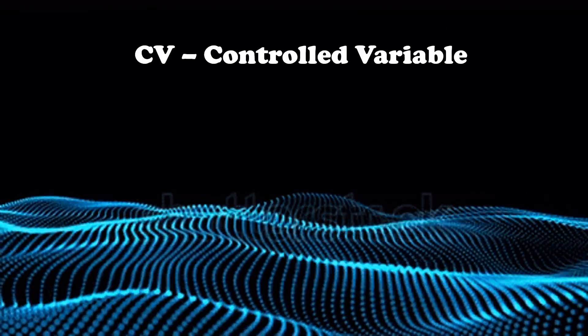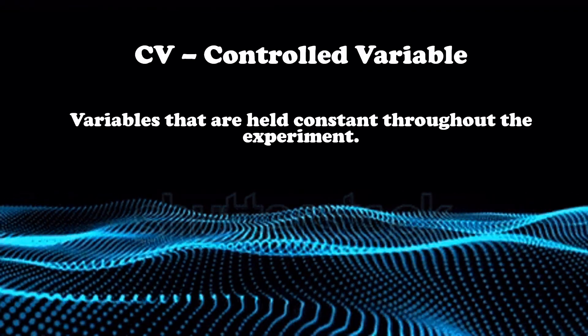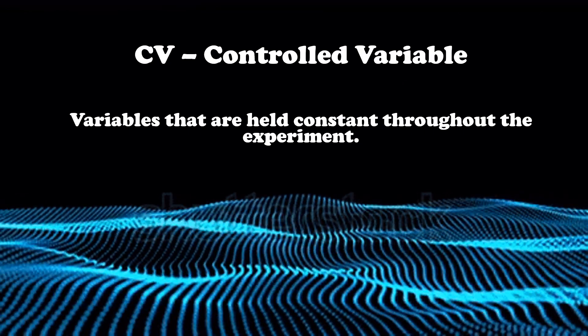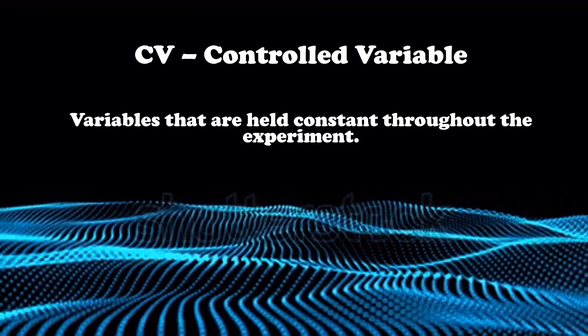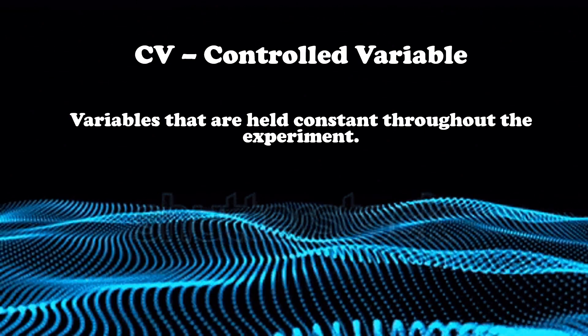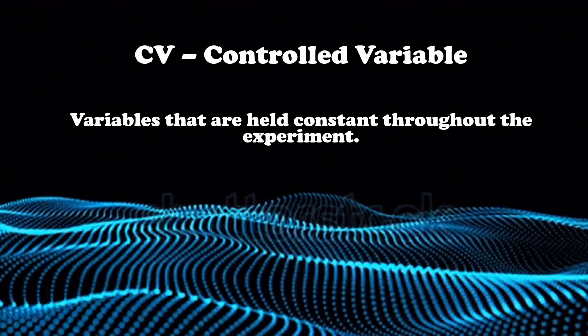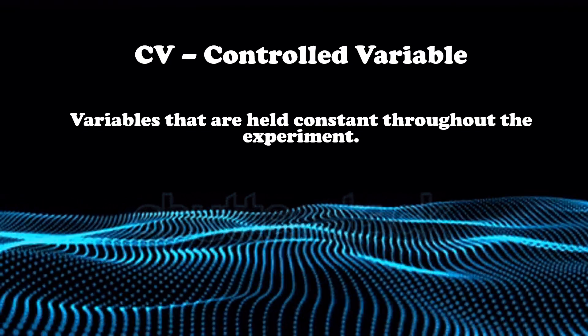And lastly, controlled variable. These are the variables that are held constant throughout the experiment. Controlled variables are considered to be the supporting characters in the experiment.